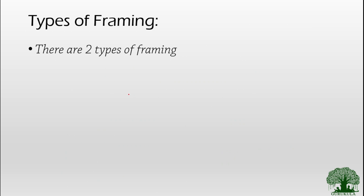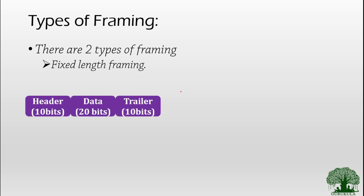There are two types of framing available in the network. The first is fixed length framing. In fixed length framing we have the header, the data, and the trailer. The size of the header, the size of the data, and the size of the trailer are already fixed — for example, 10 bits of information in the header, 20 bits in the data, and 10 bits in the trailer, giving a total frame size of 40 bits. We cannot extend or shrink the size of the frame. The frame size is already fixed. This type of frame is what we call fixed length framing.